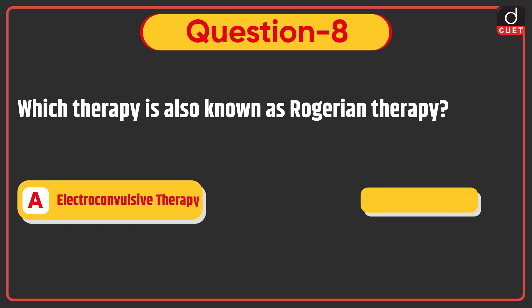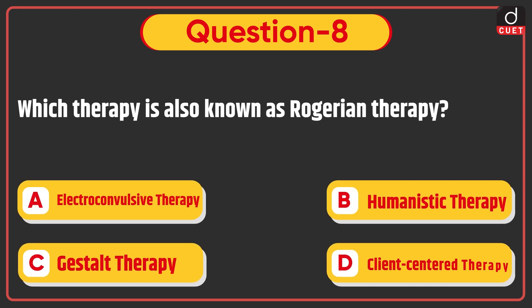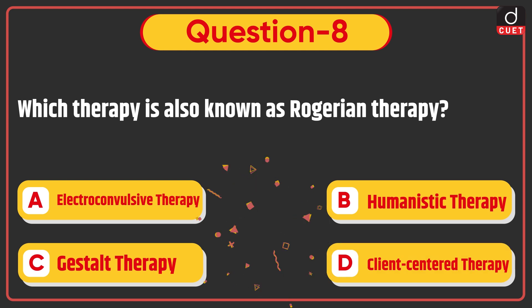Next question: Which therapy is also known as Rogerian therapy — Electroconvulsive therapy, Humanistic therapy, Gestalt therapy, or Client-centered therapy? The correct answer is option D, Client-centered therapy.